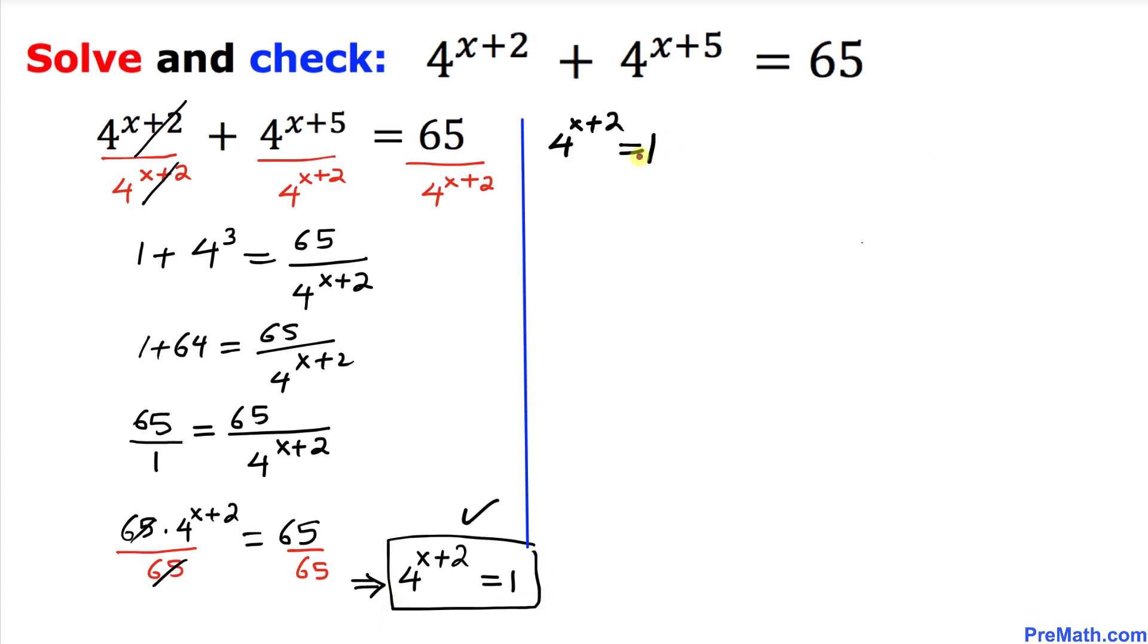Just keep in mind we can see that our base is 4, and we also know that 4^0 is 1 as well. So this could be written as 4^(x+2) = 4^0.